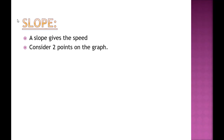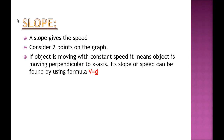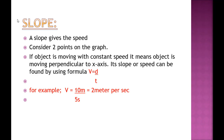We are going to discuss the slope — how we can calculate the speed of the object with the help of this slope. The slope gives the speed of the object. Consider 2 points on the graph. If the object is moving with constant speed, its slope or speed can be found by using the formula v is equal to d divided by t. For example, v equals 10 meters divided by 5 seconds, which gives 2 meters per second. If we change the values: v equals 20 meters divided by 10 seconds — again, speed is 2 meters per second.